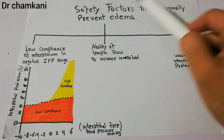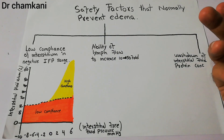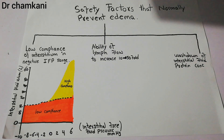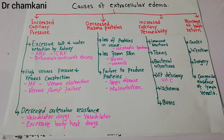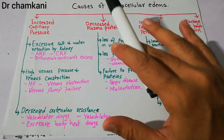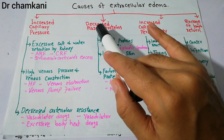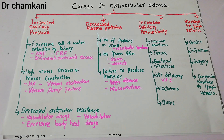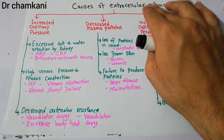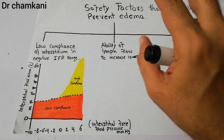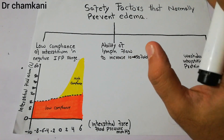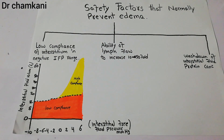In this lecture we will talk about safety factors that normally prevent edema. In the last few lectures we discussed the causes of edema, broadly classified into four main groups: edema due to increased capillary pressure, decreased plasma protein, increased capillary permeability, and blockage of lymph return. Now we will discuss the safety factors — the factors which prevent edema from occurring.